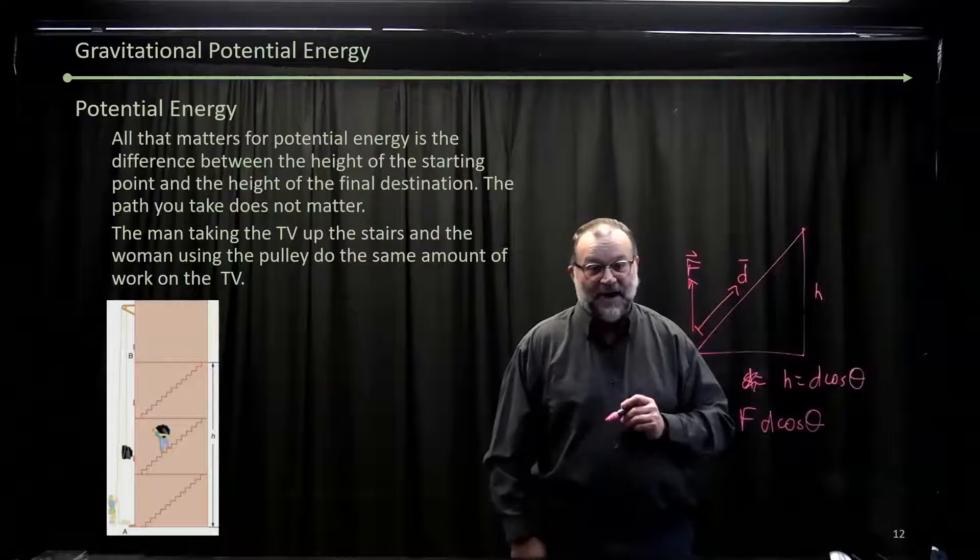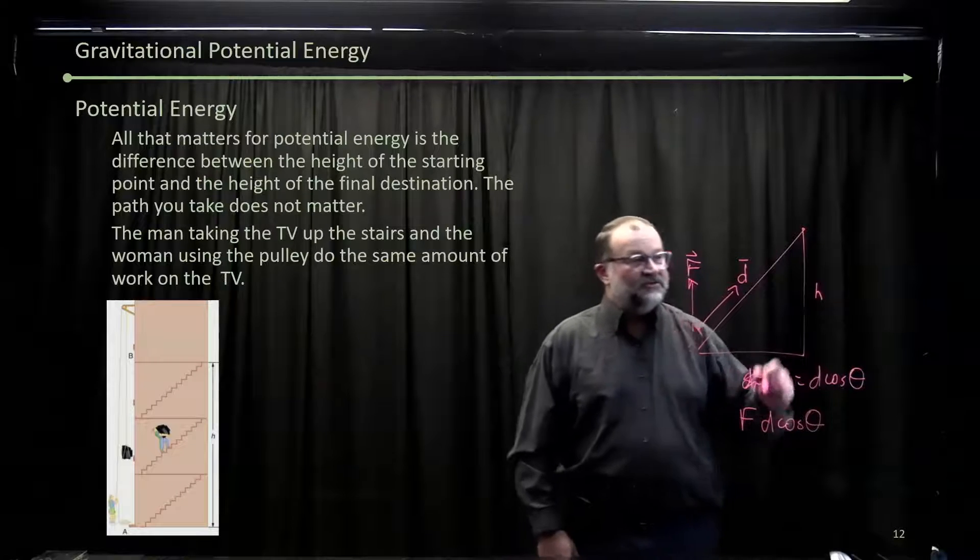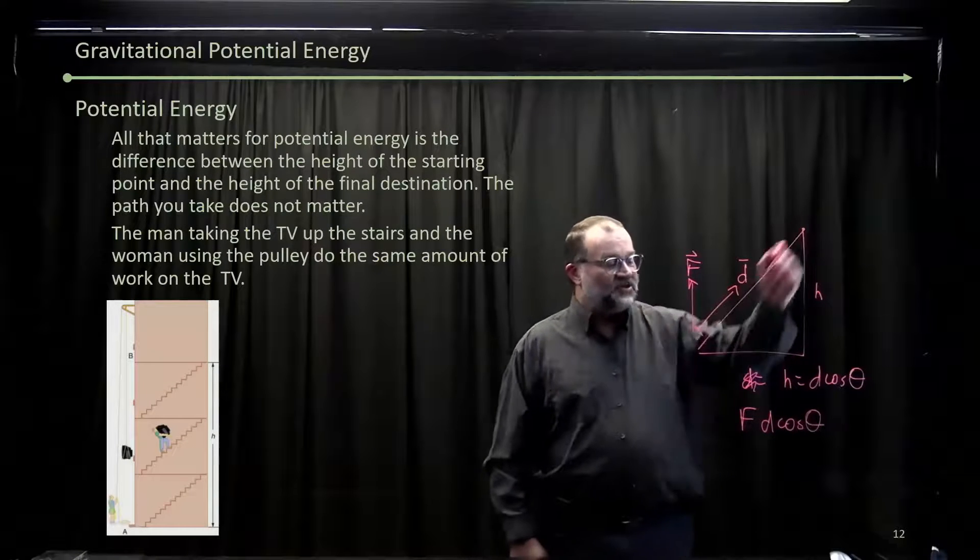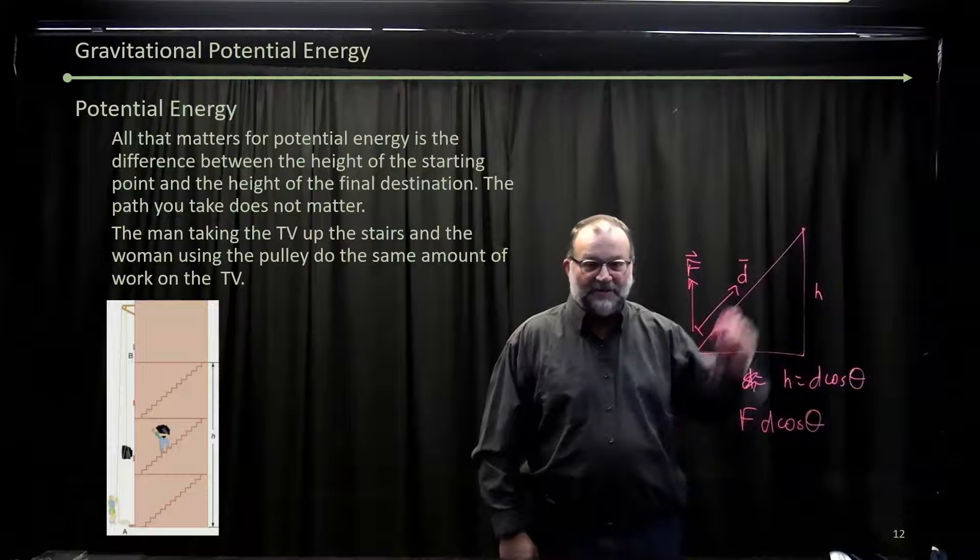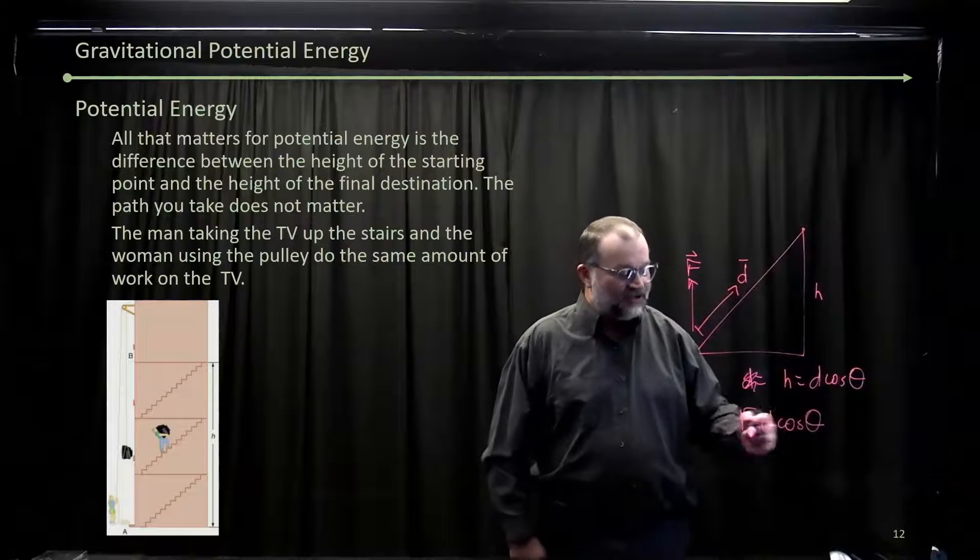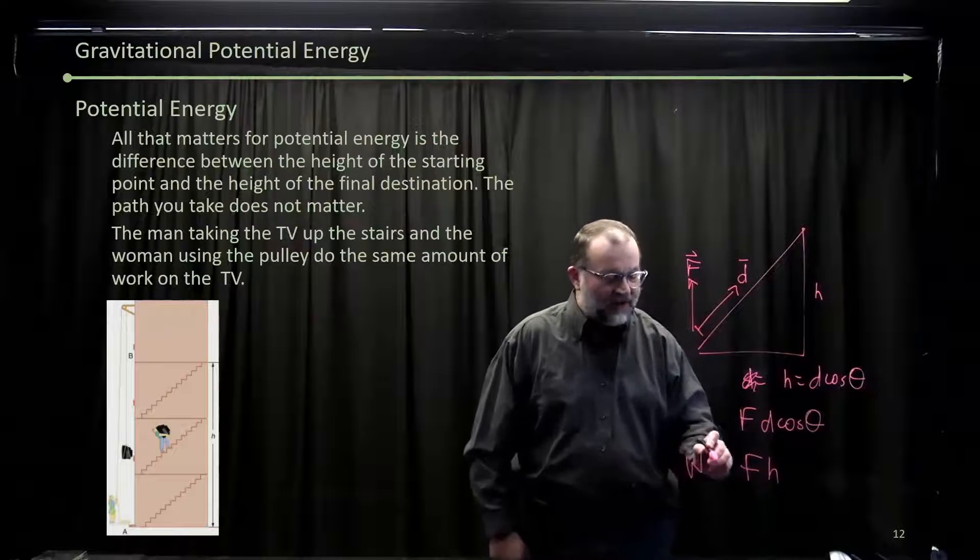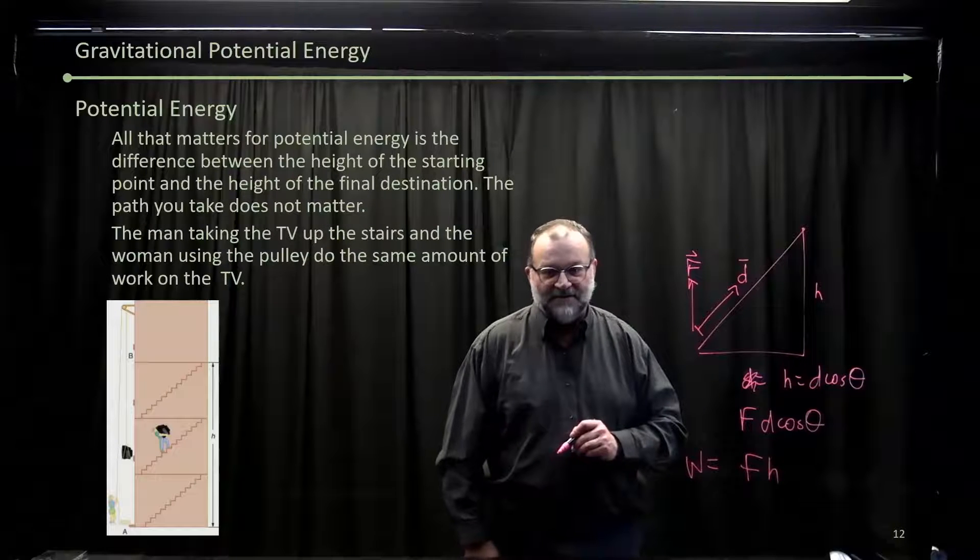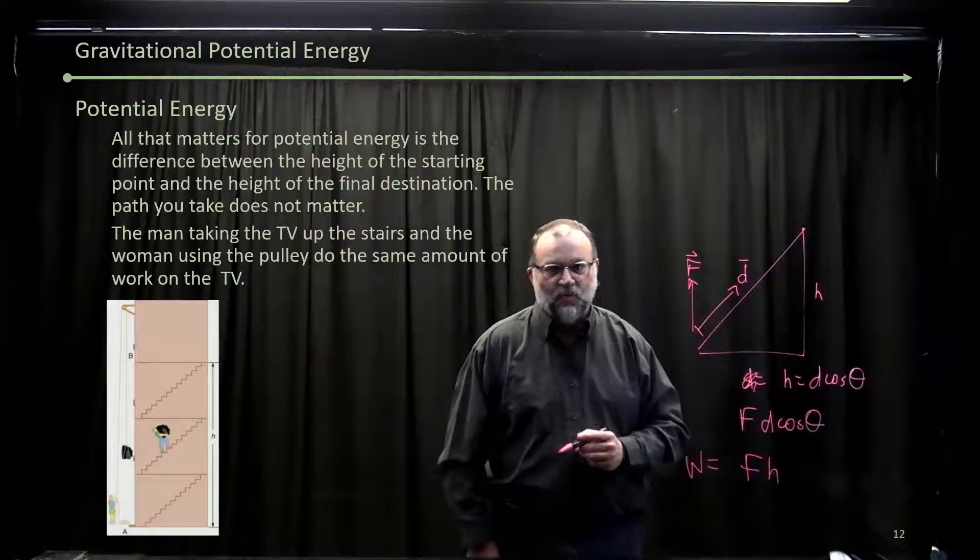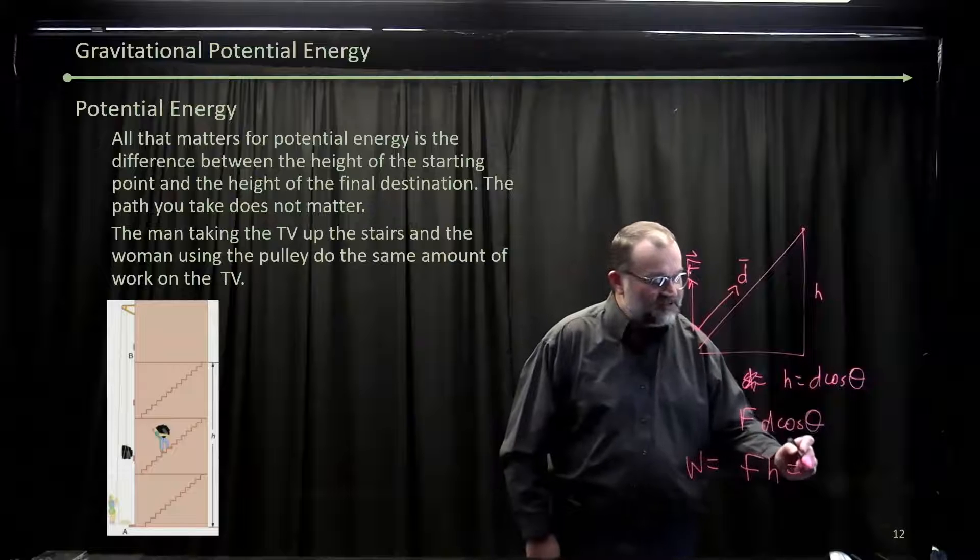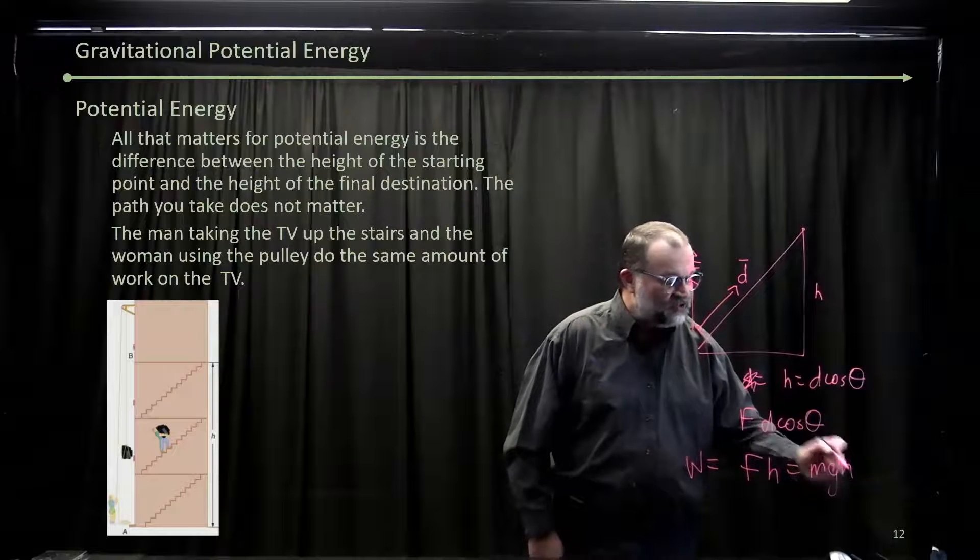It doesn't really matter that we're going up at an angle. When we get to the very top, what's the total energy we have? When we get to the very top, we have fh. Fh is our total work we've done, where f in this case is just the weight of whatever you're carrying up the stairs, so mgh.